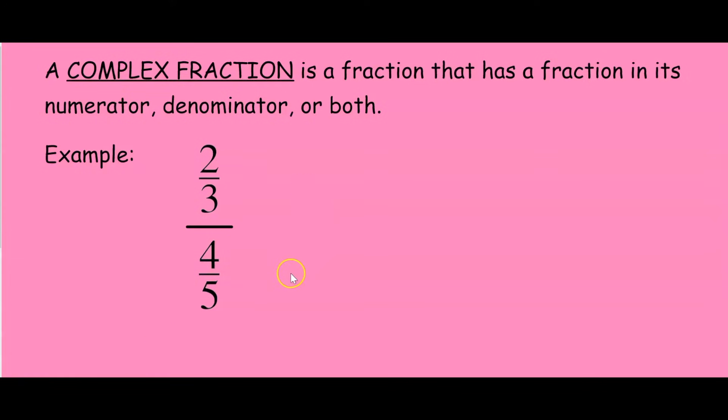For example, two-thirds over four-fifths. So to simplify this, we would simply divide two-thirds by four-fifths, which would give us five-sixths, and that would be our answer for that problem.